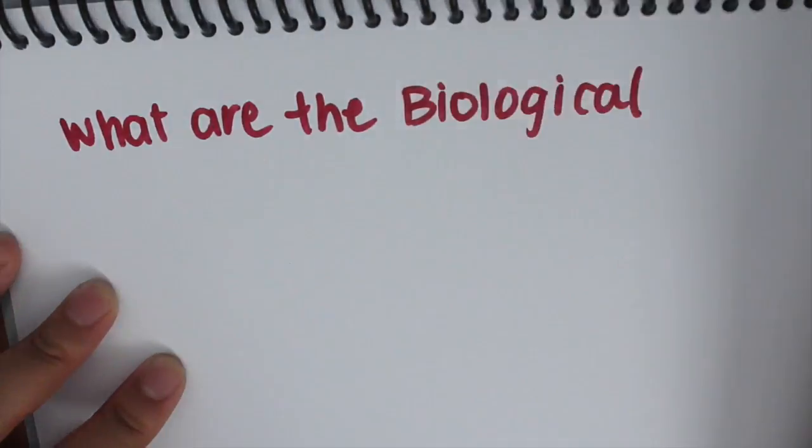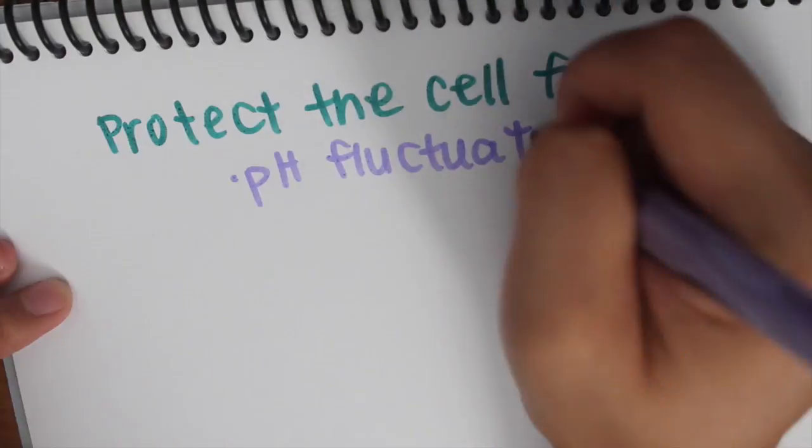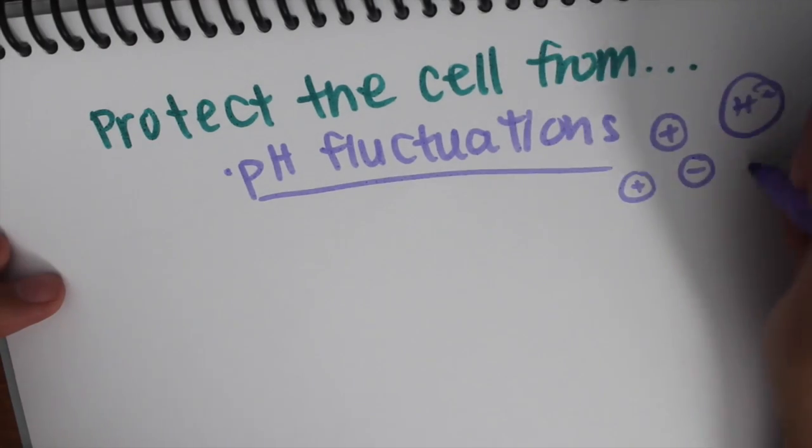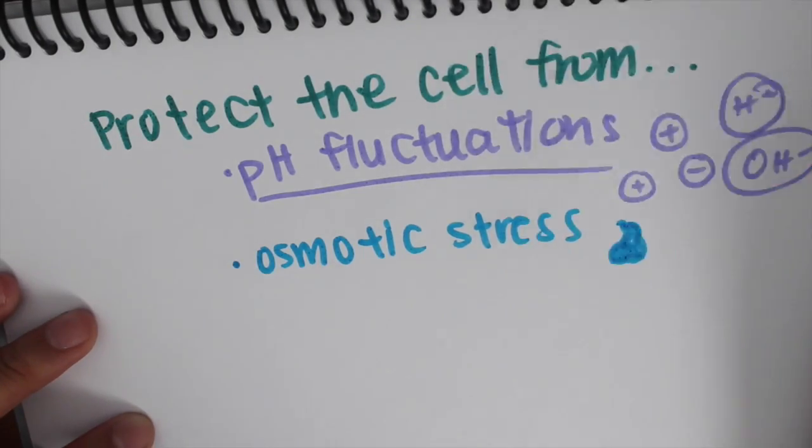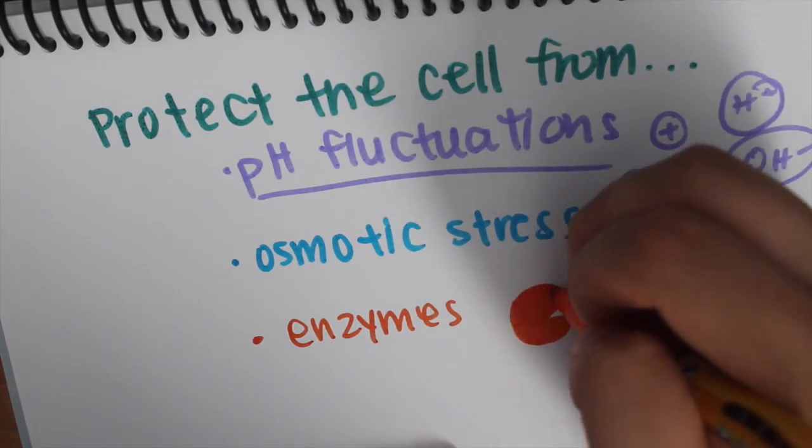What are the biological functions of the S layer? To protect the cell from pH fluctuations, osmotic stress such as an increase and decrease of solute across the membrane, and enzymes that can degrade the cell.